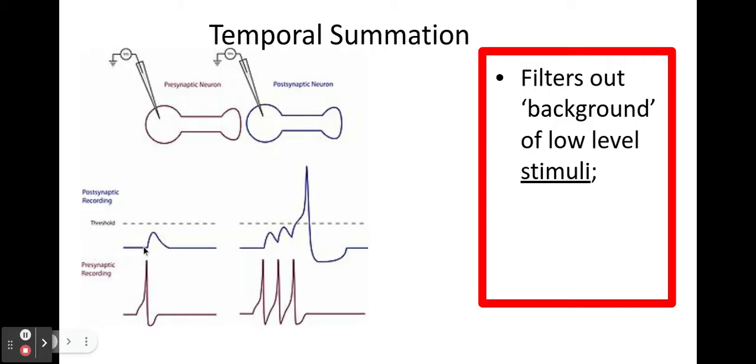So therefore if I've only got a low level stimuli, temporal summation allows that to be filtered out. For example things like wearing clothes, having clothes on your back is background stimuli. I don't constantly feel them all the time. It's filtered out eventually.